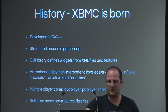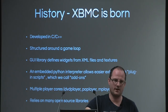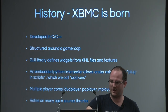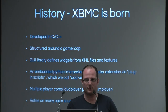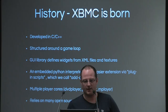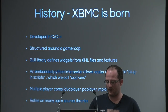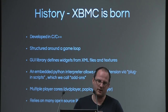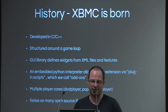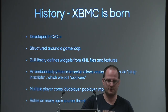Back then XBMC was born, totally developed in C and C++. Because the Xbox was a game device, we had to design it around the game loop, so we ran at 60 frames per second full time. The GUI library uses widgets and XML files to get textures to show. We have an embedded Python interpreter for what we call add-ons, so you can write add-ons that use modules to interface with Kodi. We now have multiple player cores: DVD player and PA player for audio. MPlayer was removed last year because it wasn't used anymore.